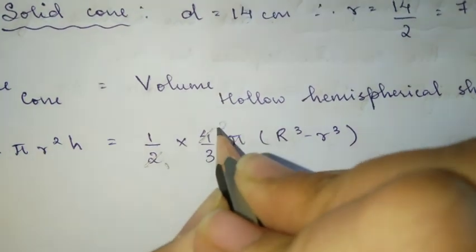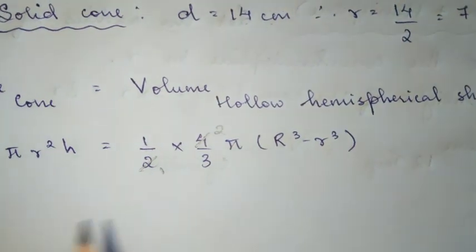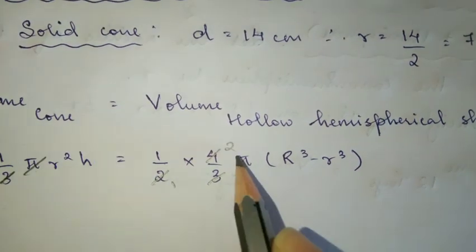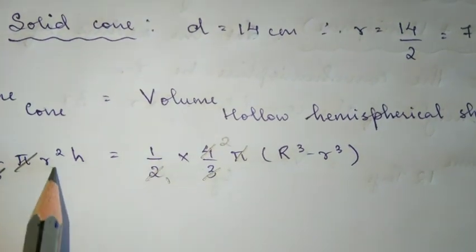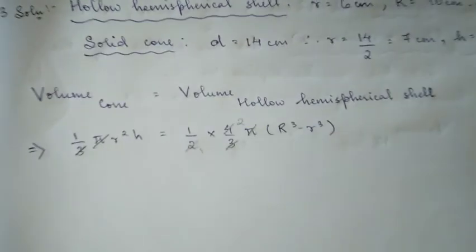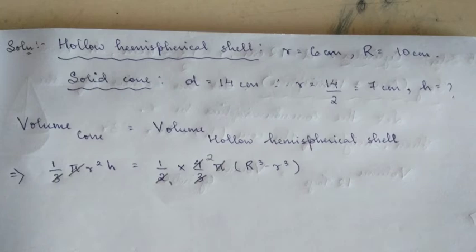Two times 2 is 4, so we can cancel the 4 with pi, and the 3 with 3. Now we just need to do the substitution and solve.